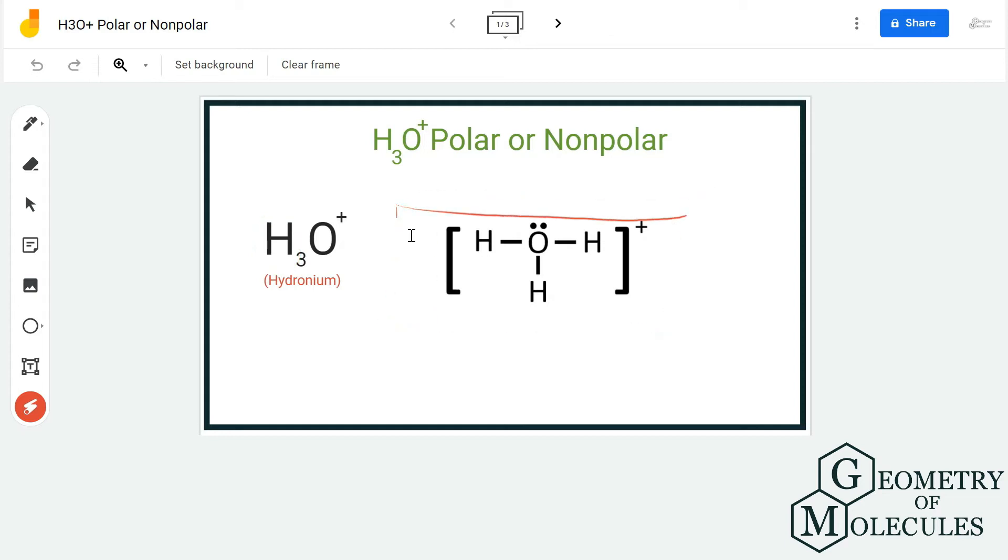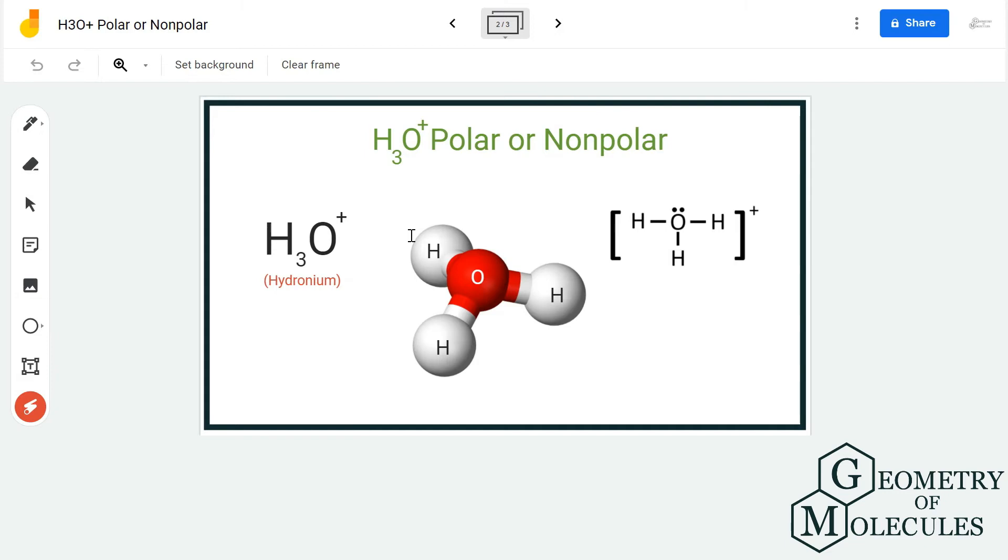And here is the Lewis structure of hydronium, in which oxygen is in the center. It is bonding with three hydrogen atoms. If you look at its shape in 3D, you can see that this molecule is not linear.